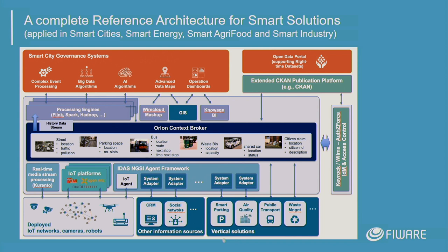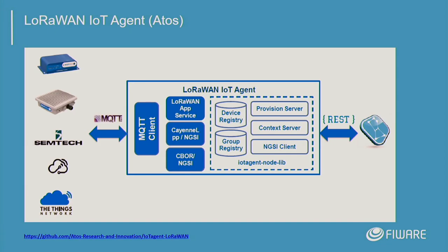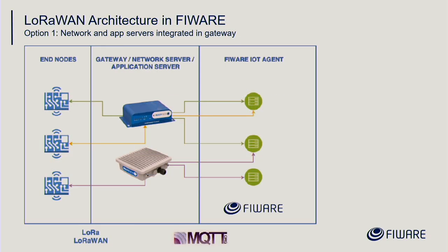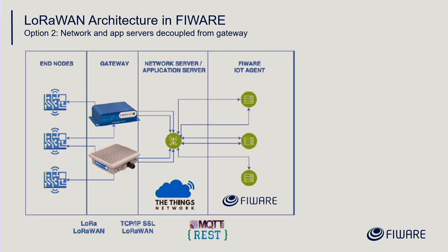One important source is the IoT agent, which transfers different protocols. One of these IoT agents is the LoRaWAN IoT agent, which has been developed by one of our partners, the company Atos — a global system integrator with 120,000 employees worldwide, and the company I'm coming from. They implemented this LoRaWAN IoT agent. On the left side are the nodes, on the right side the Fiverr-based application. There are three different ways: one is to have the network and application servers integrated into the gateway. The second option is to have the network server and application server separated from the gateway.